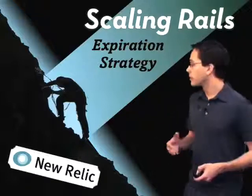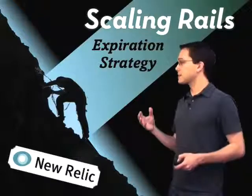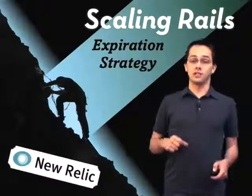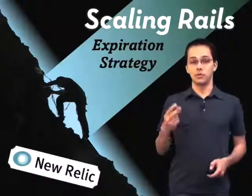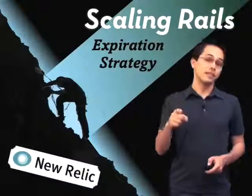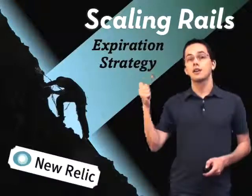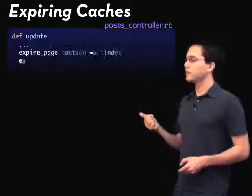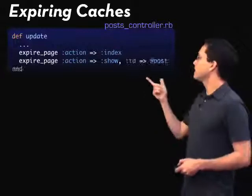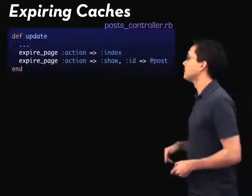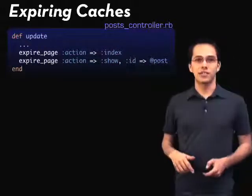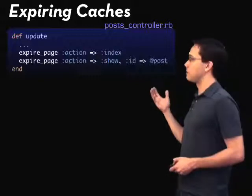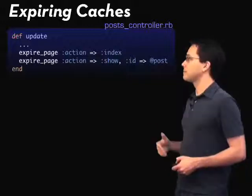In this episode, we're going to be talking about expiration strategy and building off the blog application that you saw in episode two. If you haven't seen it, go back and watch it. So if you remember, we ended up putting these two lines of code inside of our update action so that we could expire the cache when we call the update action.